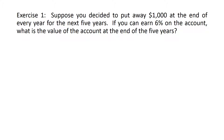First we will start solving problems using a scientific calculator. Exercise one says: suppose you decided to put away one thousand dollars at the end of every year for the next five years. If you can earn six percent on the account, what is the value of the account at the end of the five years? Notice it says putting away one thousand at the end of every year, so this is what we call a payment.